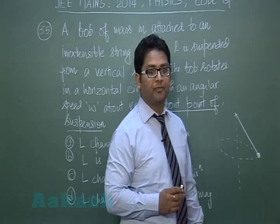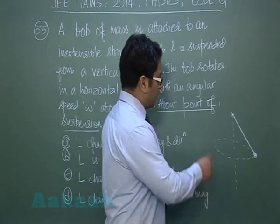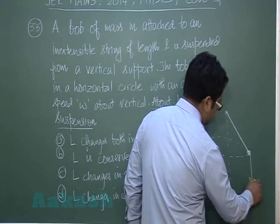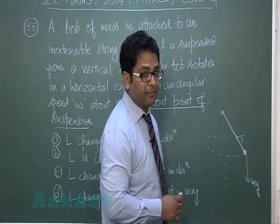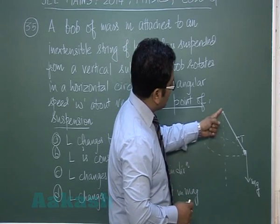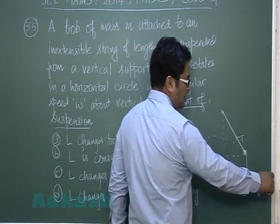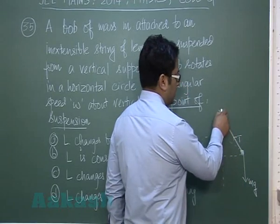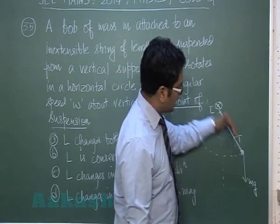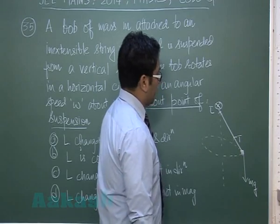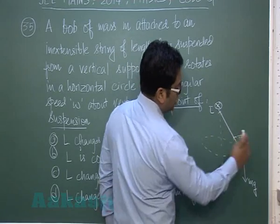We know that torque changes angular momentum, so let's make the free body diagram. We have mg downward and tension T — these are the total forces. The torque due to T about the point of suspension is zero, and the torque due to mg we find using r cross mg. The direction of torque tau is determined by r cross F.